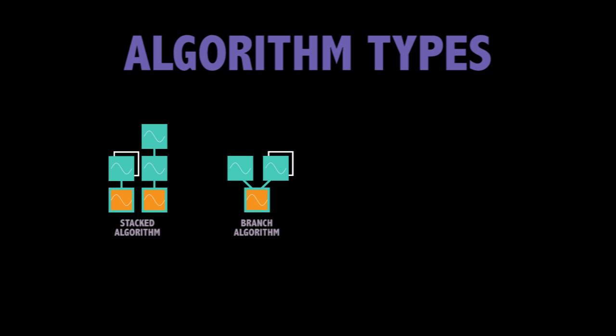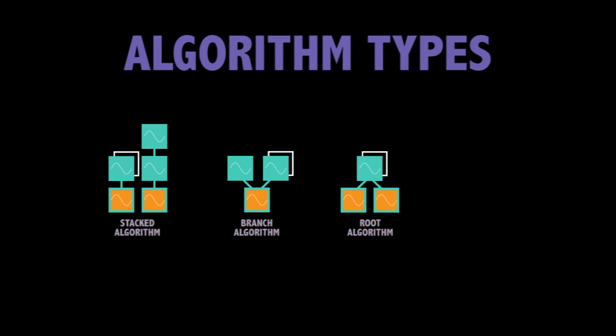Branch algorithms have multiple modulators connected to a single carrier. Root algorithms have single modulators connected to multiple carriers. And carrier-only algorithms have multiple operators in the carrier position. Because these carriers have no modulators, there is no potential to alter the shape of each carrier's sine wave in this algorithm.